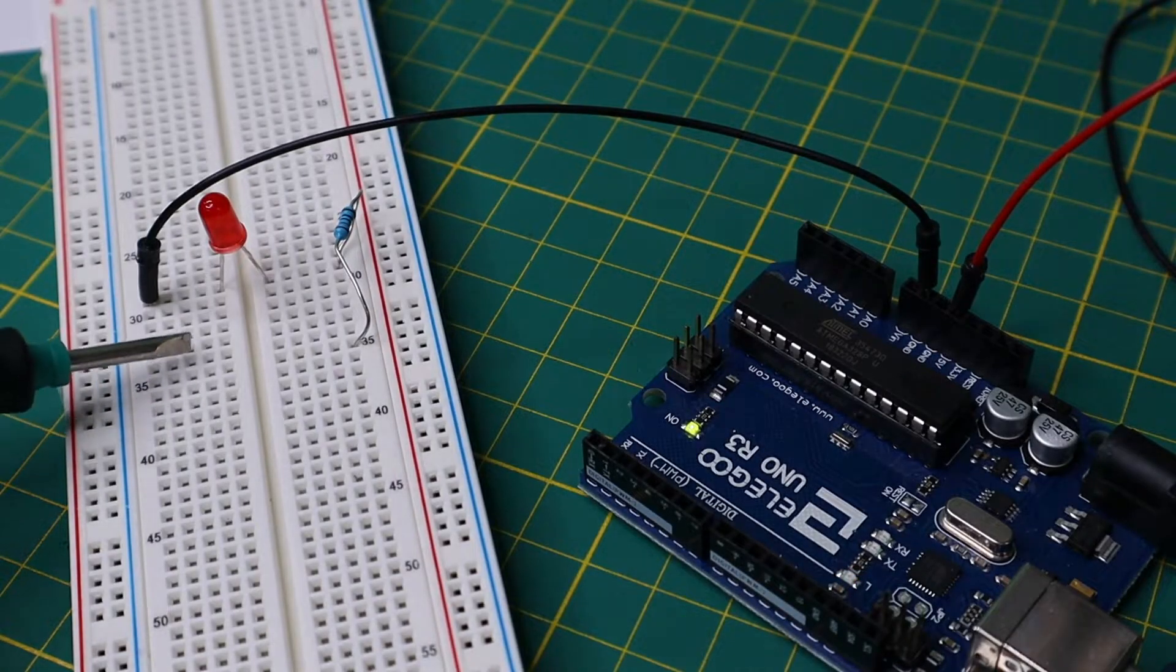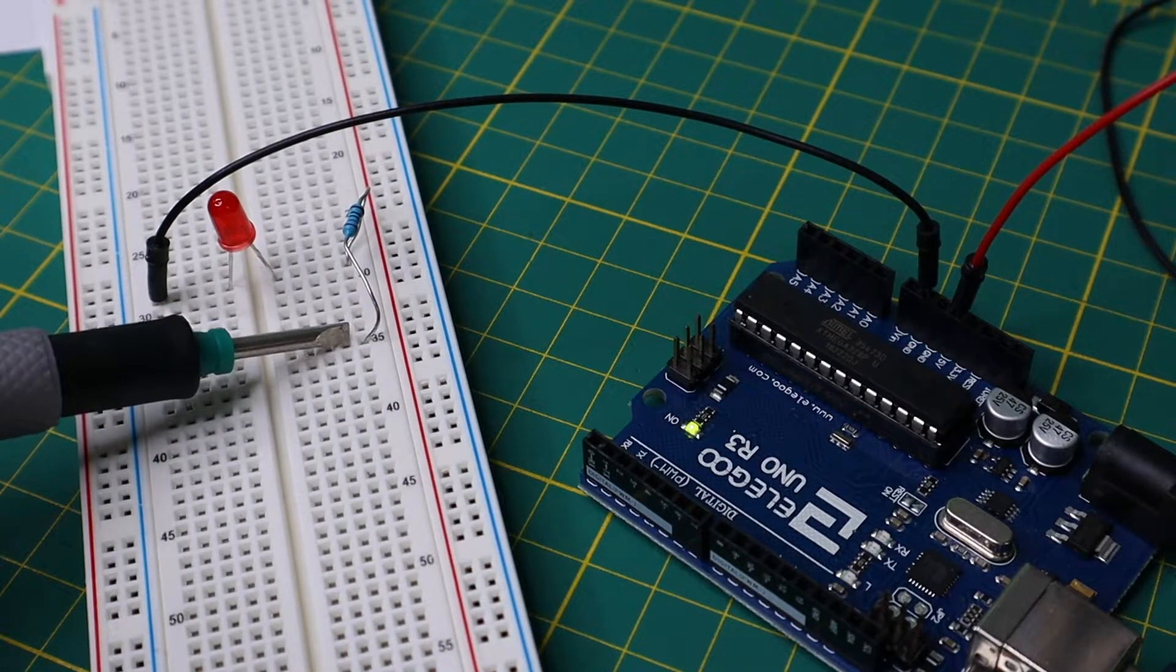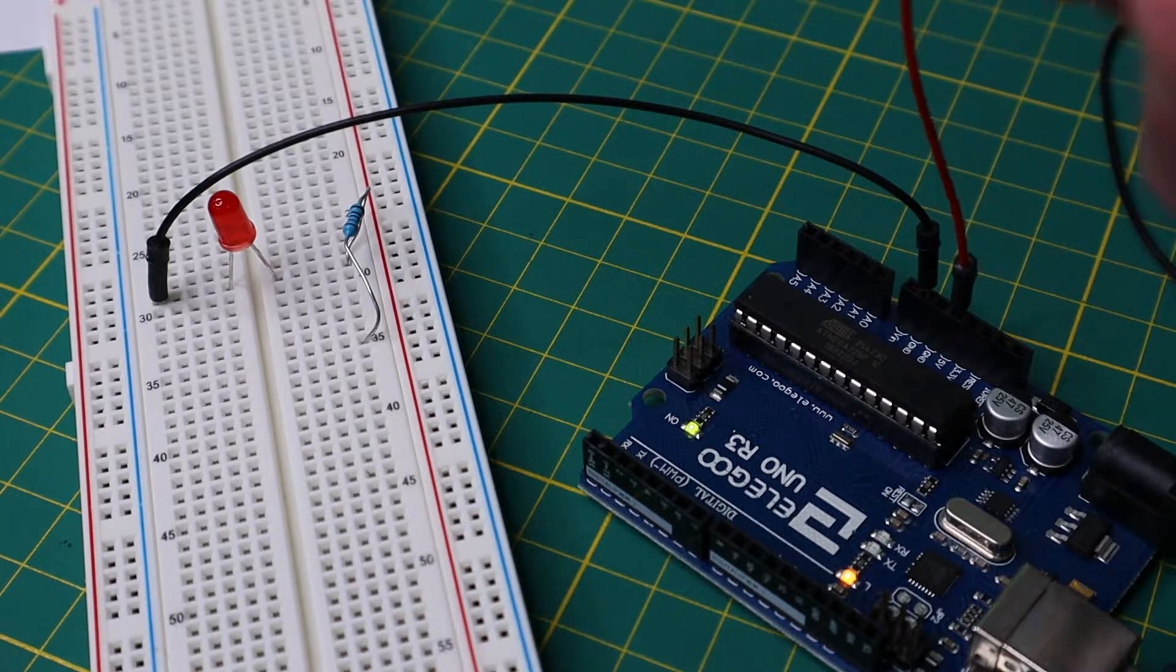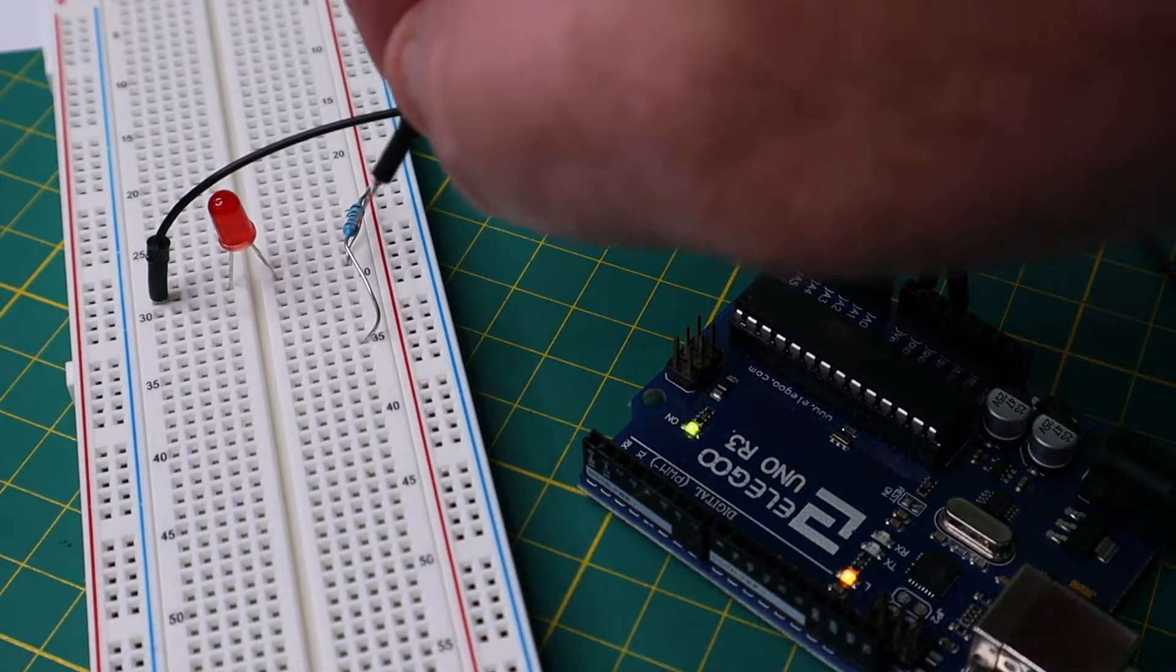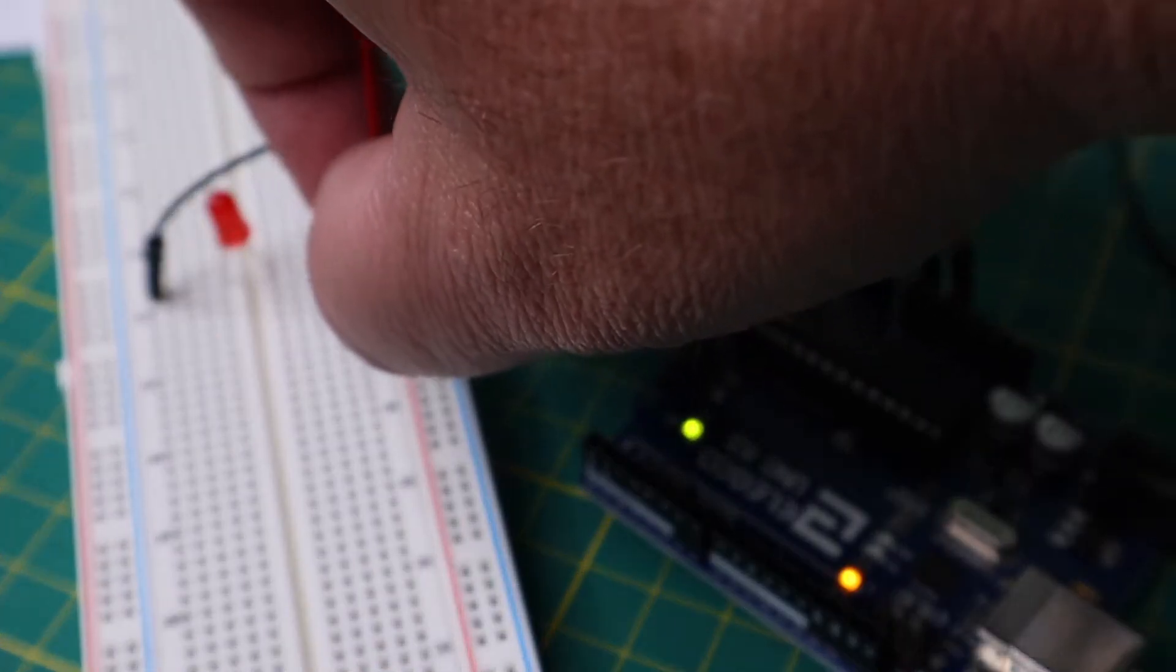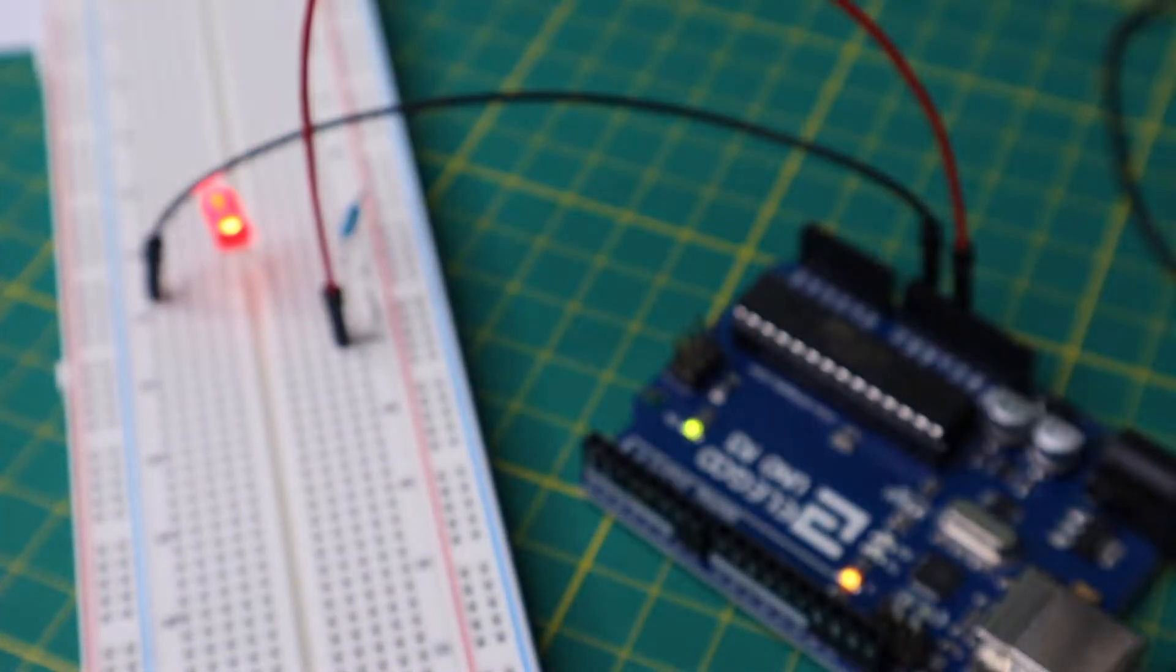Here we have an LED and a current limiting resistor. As you can see, when I apply 5 volts to the anode, right here, it lights up.